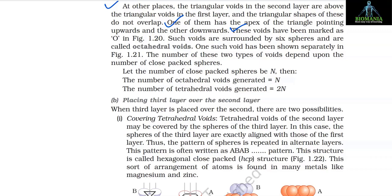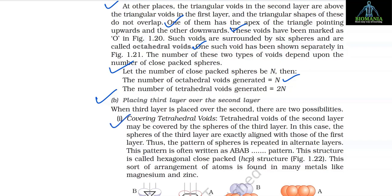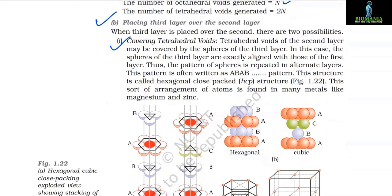When the third layer is placed over the second, there are two possibilities: (1) Covering tetrahedral voids — the spheres of the third layer align with those of the first layer, giving an ABAB pattern. This structure is called hexagonal close-packed (HCP) structure, found in metals like magnesium and zinc.